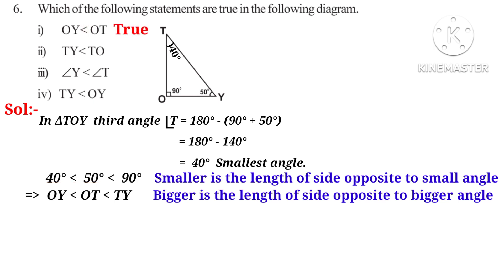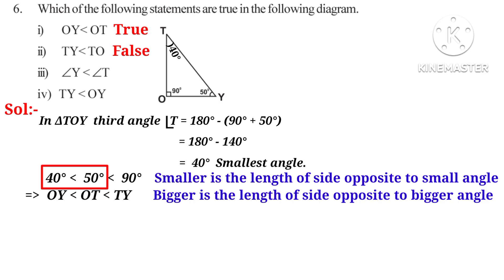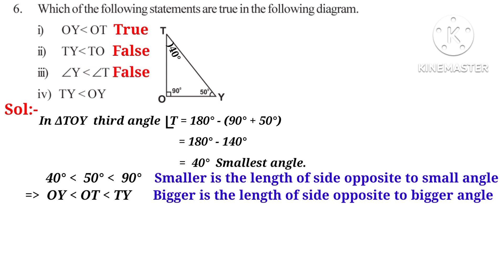Observe that OT is less than TY, or equivalently TY is greater than OT, so the second statement is false. Now 40 degrees is less than 50 degrees, which means angle Y is less than angle T — the third statement is false. Observe that TY is the hypotenuse and thus the biggest side, so OY is less than TY; but the statement TY is less than OY is false.